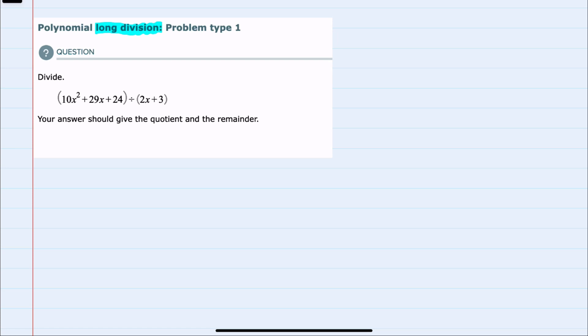So I'll start by setting up long division with the divisor outside and the dividend inside. I'll start by noticing that for both the divisor and the dividend, we have every degree after the highest degree represented.